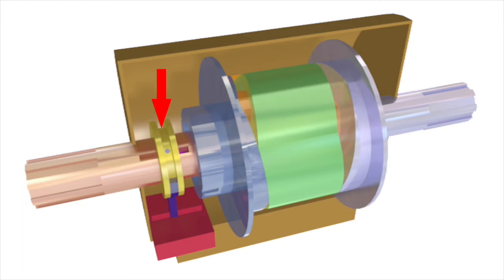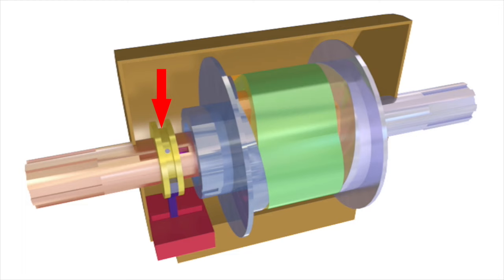The adjustment collar can be easily repositioned along the input shaft, even during operation, allowing reduction ratios anywhere between 0 and 100%.